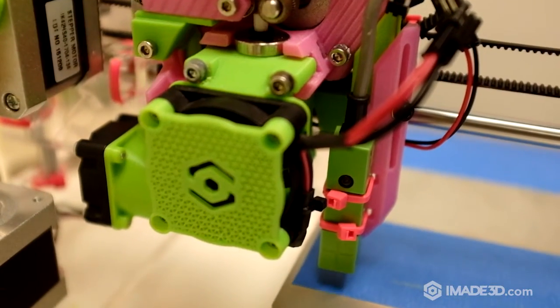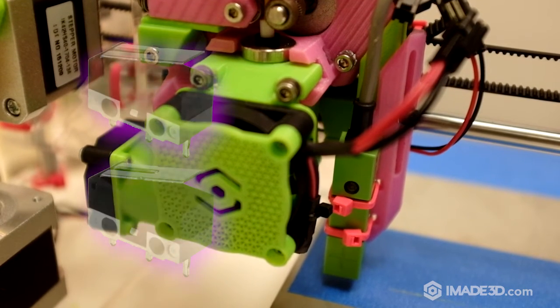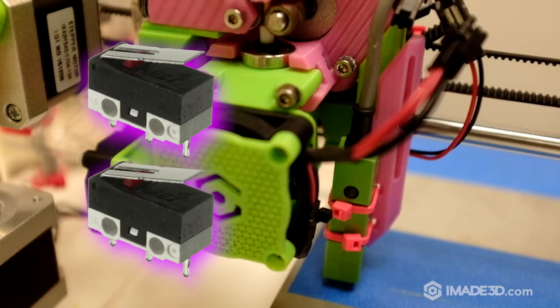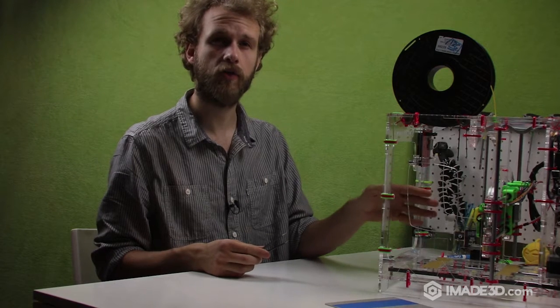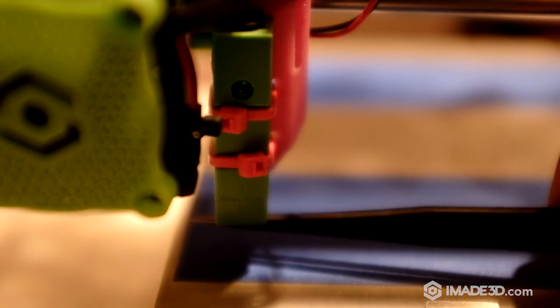In Jellybox, the proximity sensor plays the role of Z endstop. It determines the Z homing position, just like simple mechanical microswitches determine the homing positions on X and Y axes. You can test your probe by staring at the integrated LED light as you put some piece of ferromagnetic metal close to it.